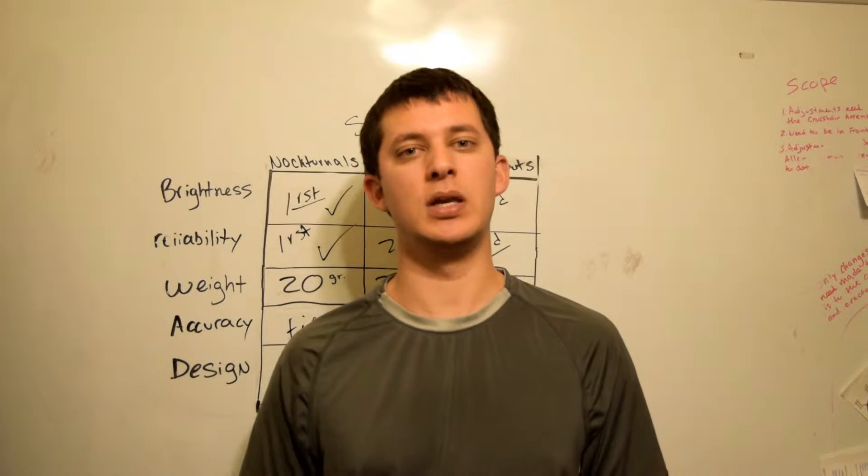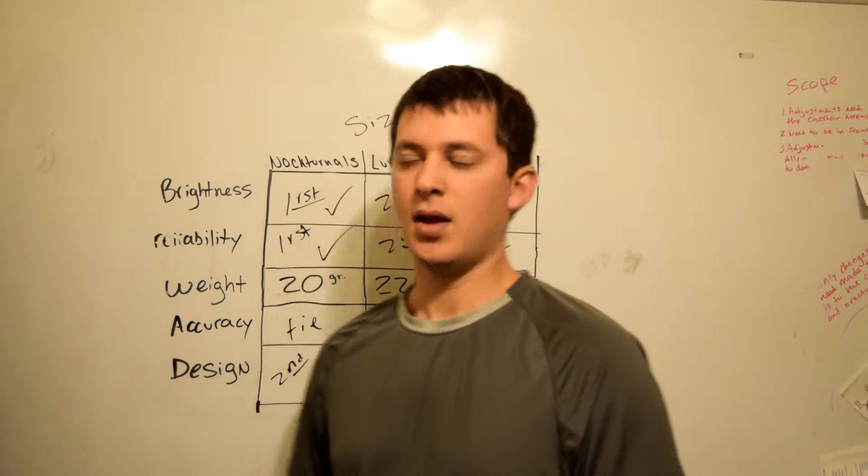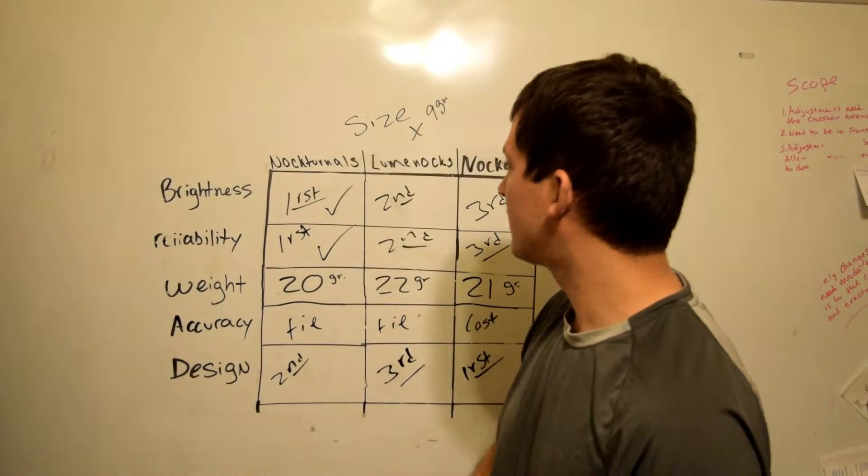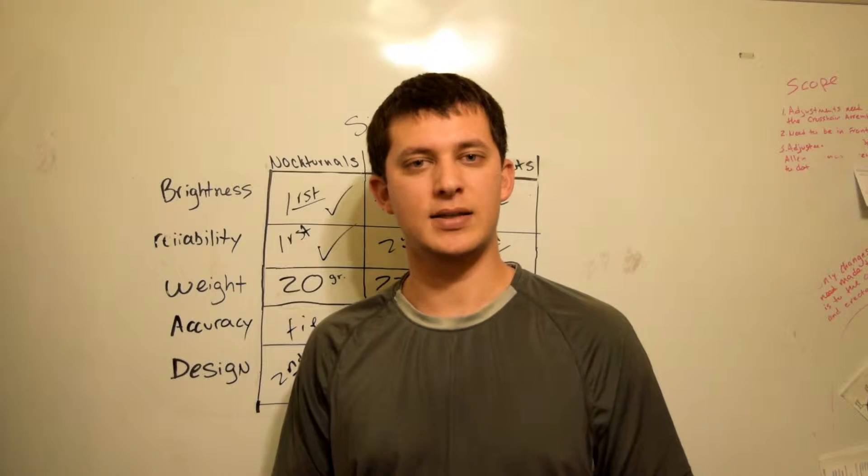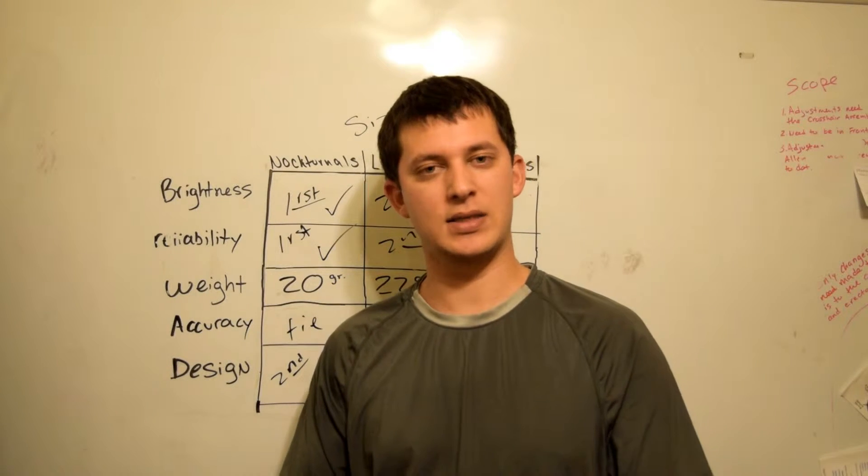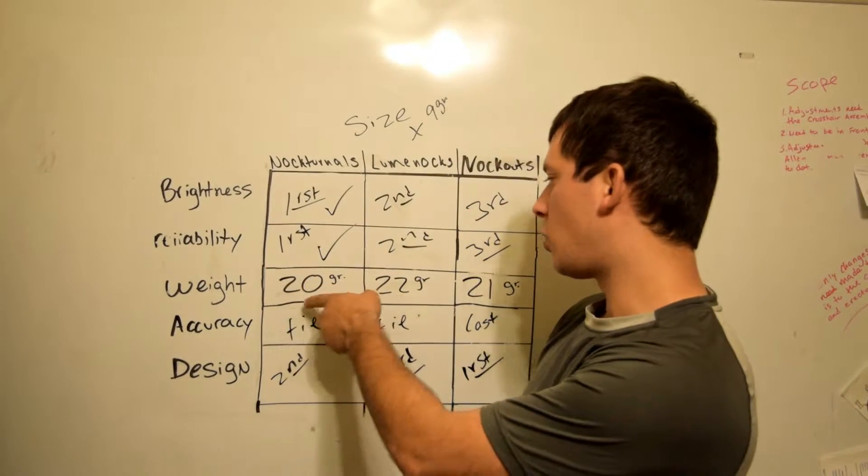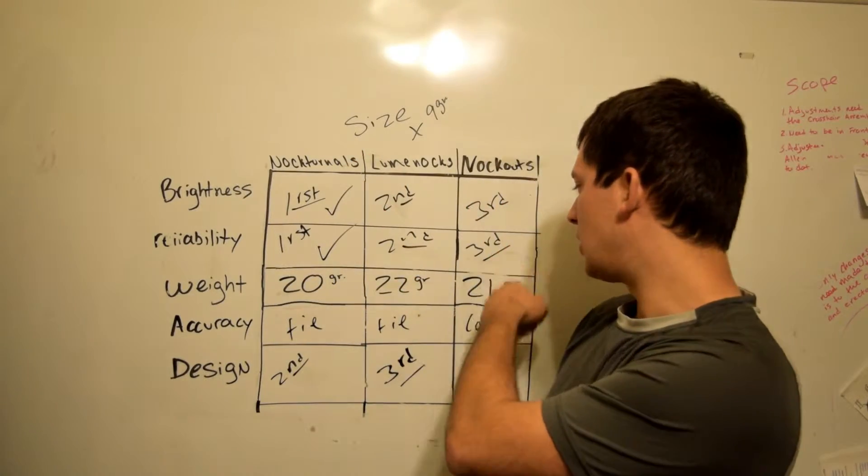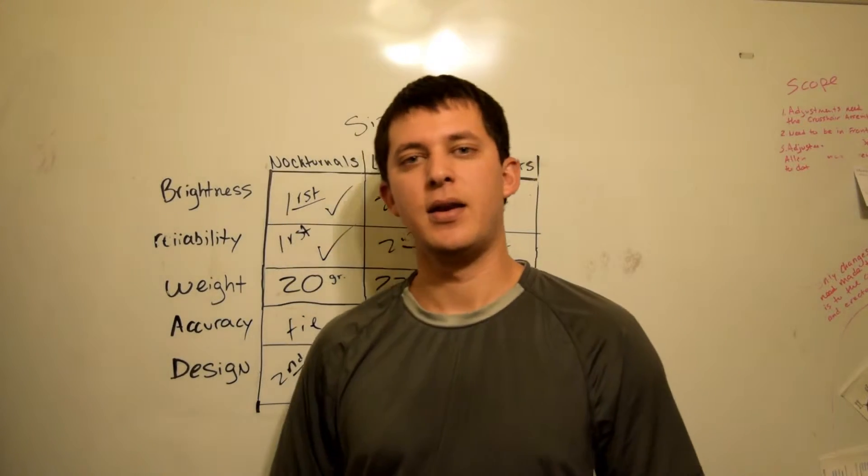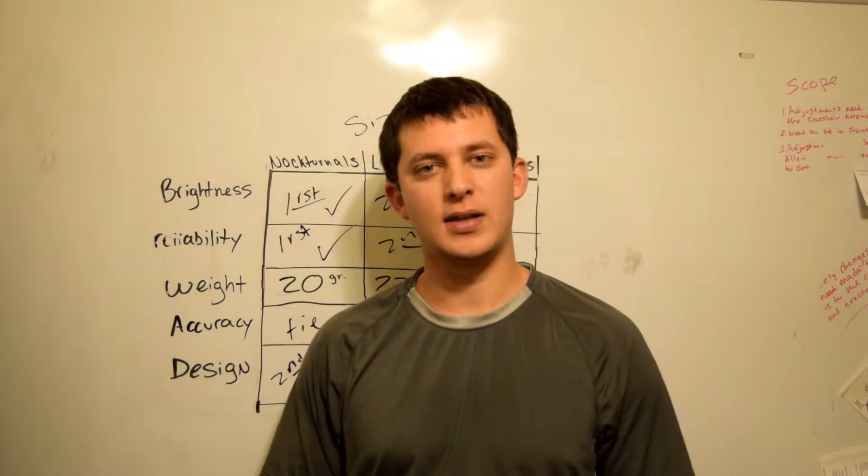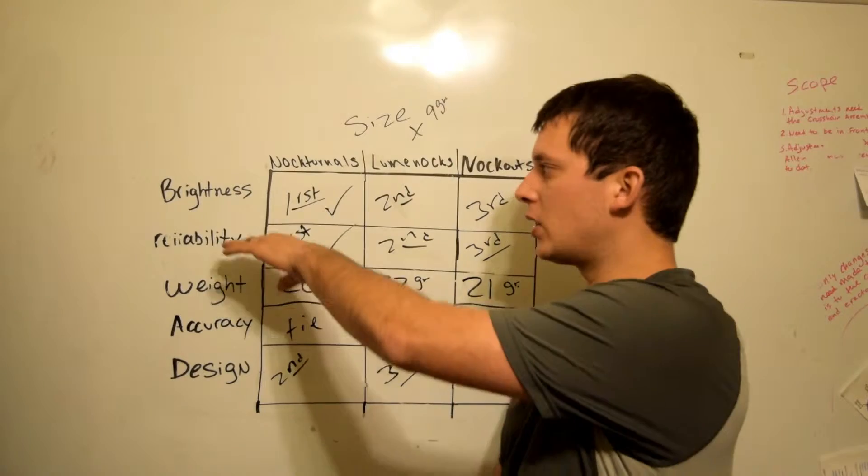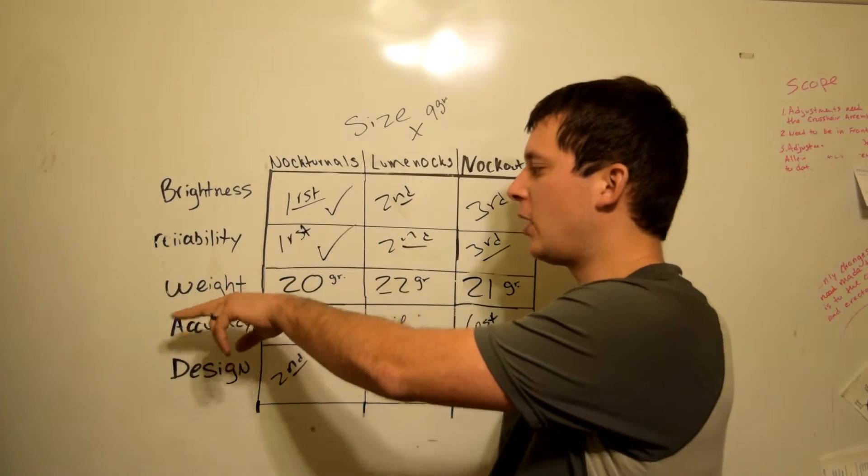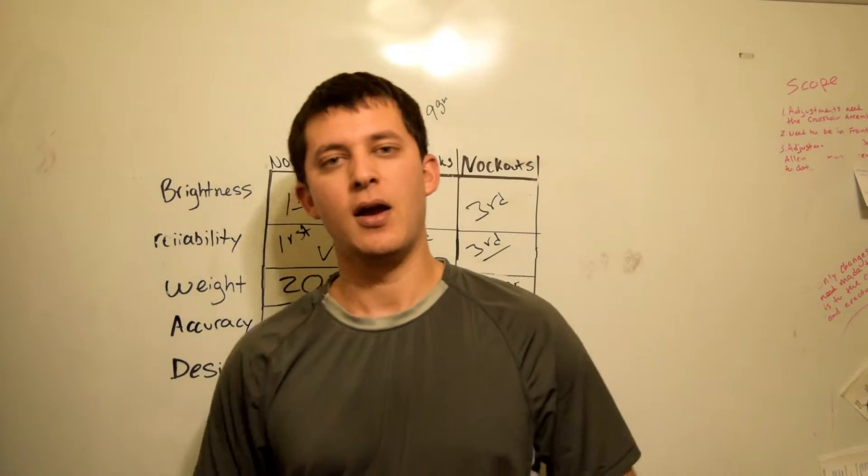I'm going to be using a size X, which is a nine-grain regular knock for Easton Axis arrows. These ones are 20, 22, and 21 grain knocks, so not a very big difference. I have some categories over here: brightness, reliability, weight, accuracy, and design.